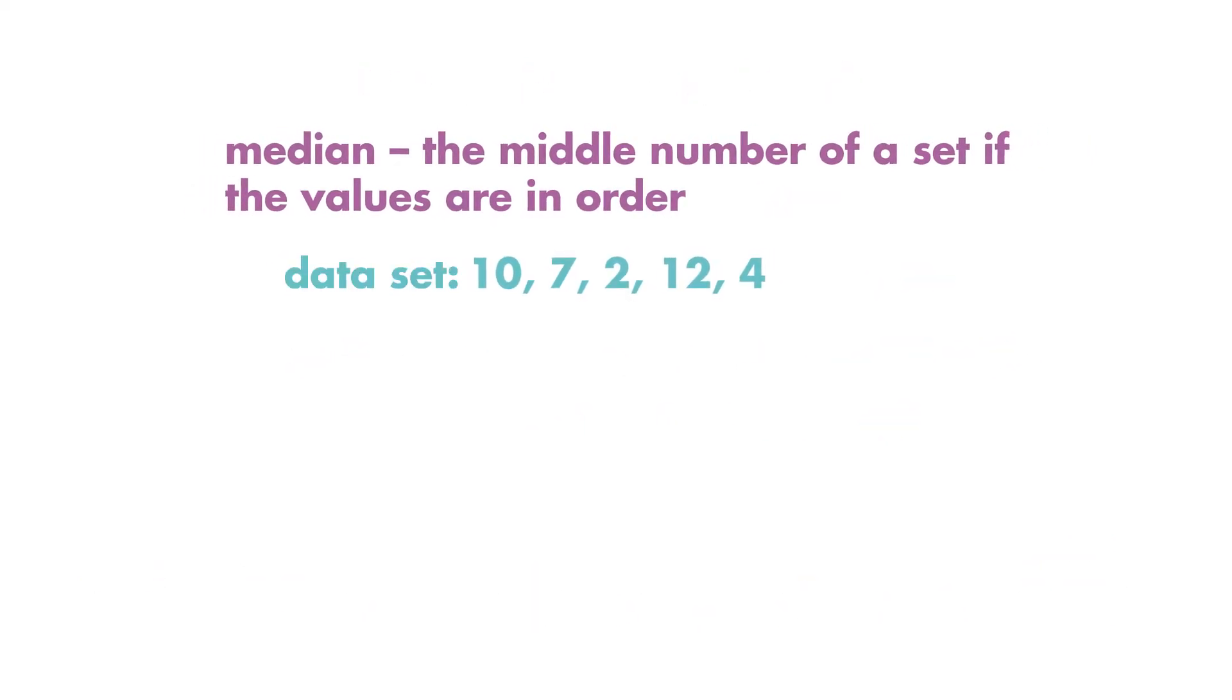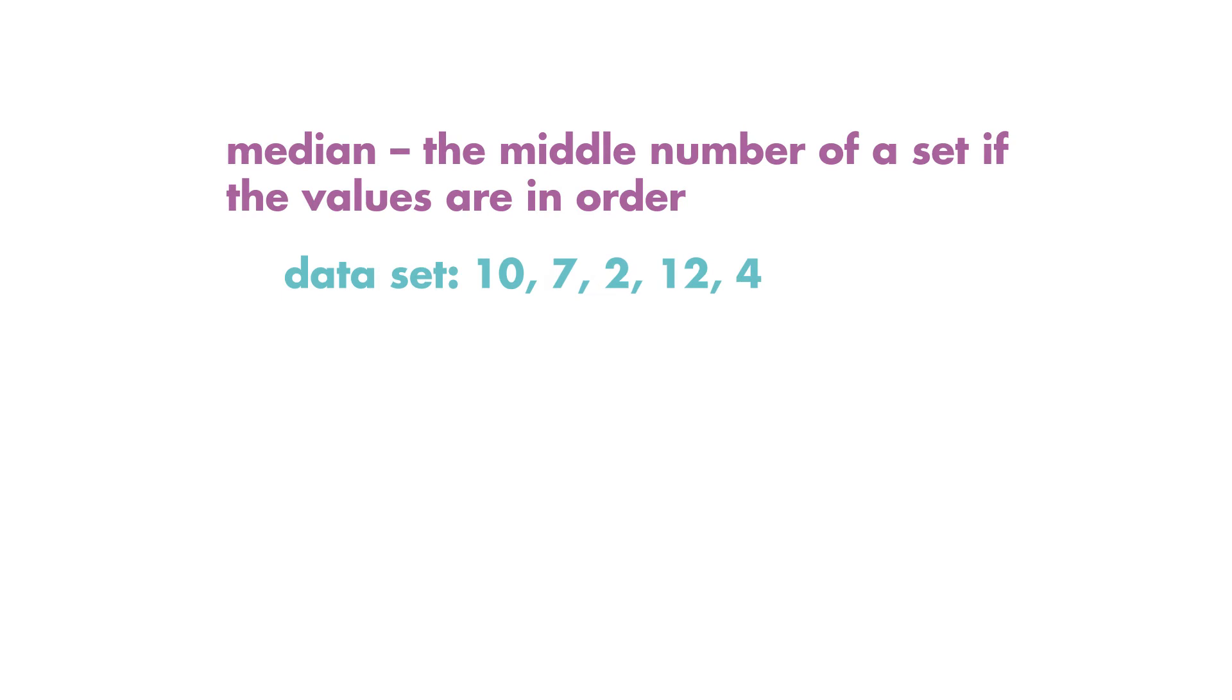The median is the number in the middle of the data set when the values are in order from least to greatest. If there is an odd number of values in a data set, the median is the number in the middle of the data set.